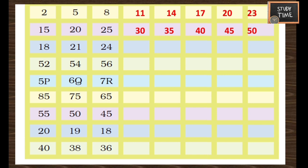Observe this pattern: 18, 19, 20 is left, then 21. Similarly you can continue — the answer will be 27, 30, 33, 36, 39. Next, observe this pattern — they left one number in between, so they left 53. Similarly you can leave 57. After 56 you can write 58 — so 58, 60, 62, 64, 66 is the answer.